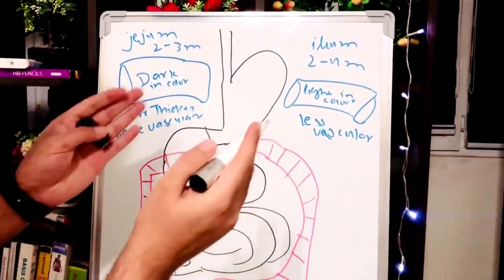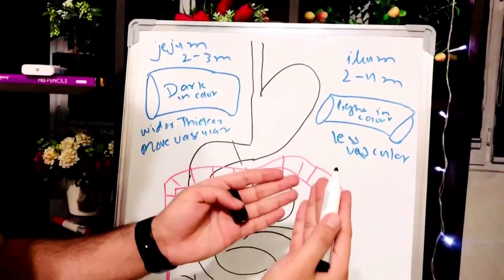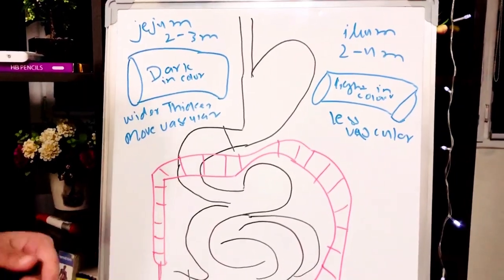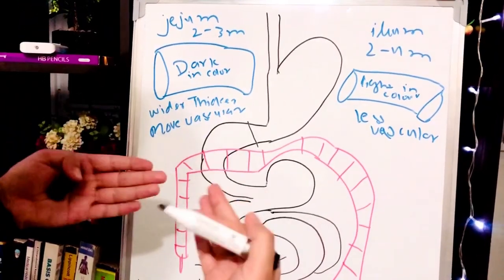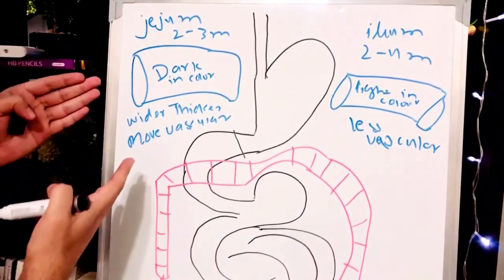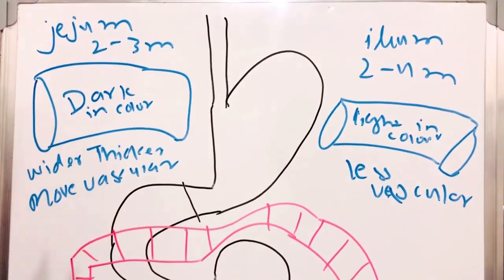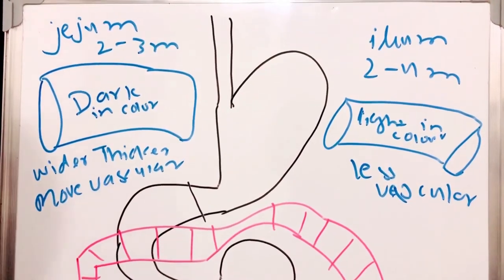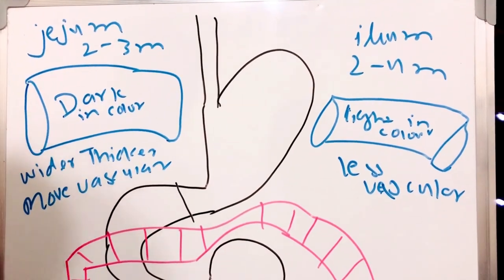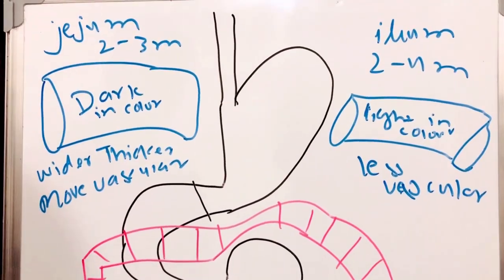Now we will talk about the jejunum and ileum. The jejunum is two to three meters long and the ileum is two to four meters long. We can differentiate them by appearance: the jejunum is thick and wider while the ileum is thin and lighter. The jejunum is darker in color while the ileum is light in color, and the ileum is less muscular while the jejunum is more muscular.